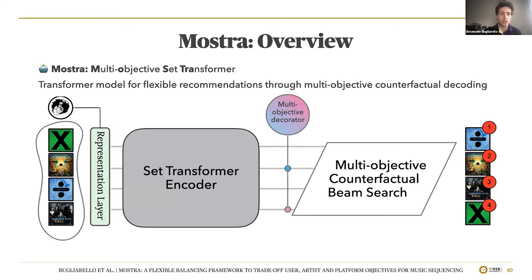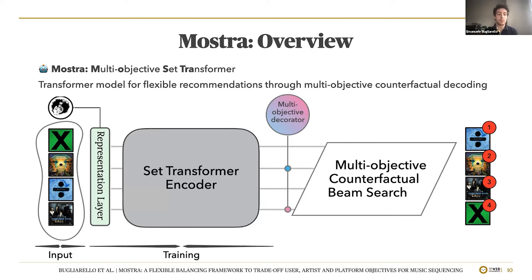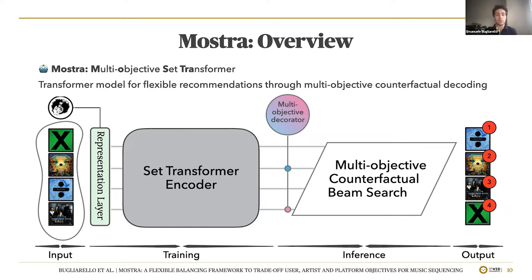Here is a high-level overview of our system. Given a user and a pool of songs, they are first mapped into a vector space through a representation layer. A set transformer encoder then provides contextualized representations for each song. At training time, the representation layer and encoder are optimized to predict the user satisfaction metric, SAT. At inference time, a multi-objective decorator flags songs meeting target objectives, and the encoded song pool along with their creator-centric objectives are given as input to our beam search algorithm, which returns an ordered list of songs satisfying both user and creator-centric goals.